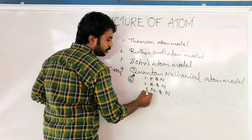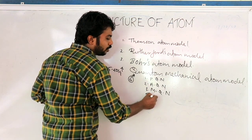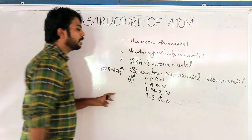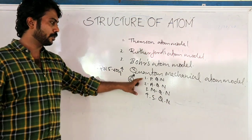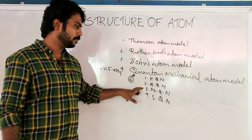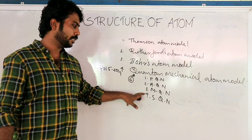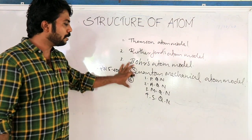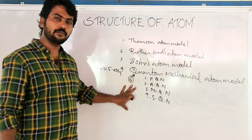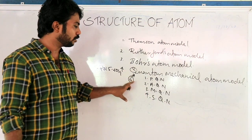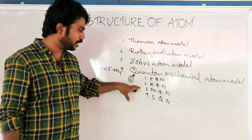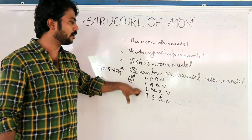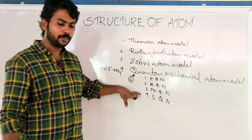In Quantum Mechanical, we have four quantum numbers. The four quantum numbers are: Principal, Azimuthal, Magnetic, and Spin. We can look at each of these quantum numbers.